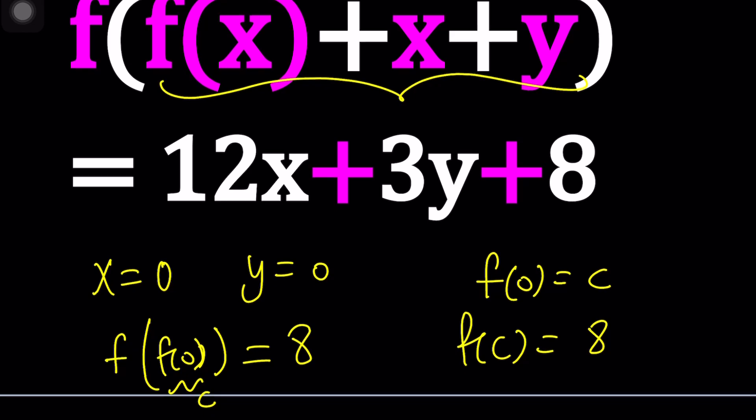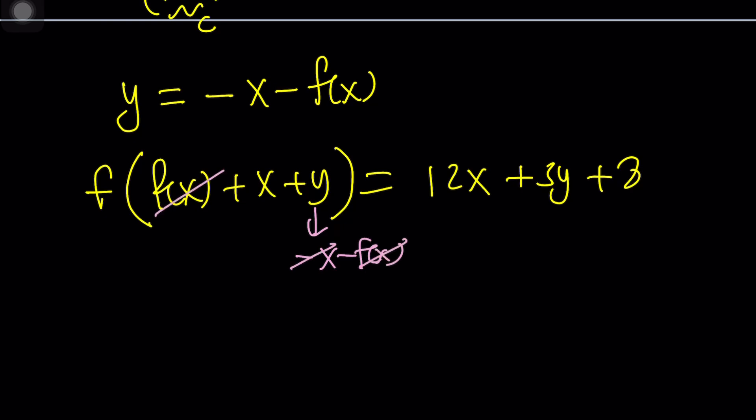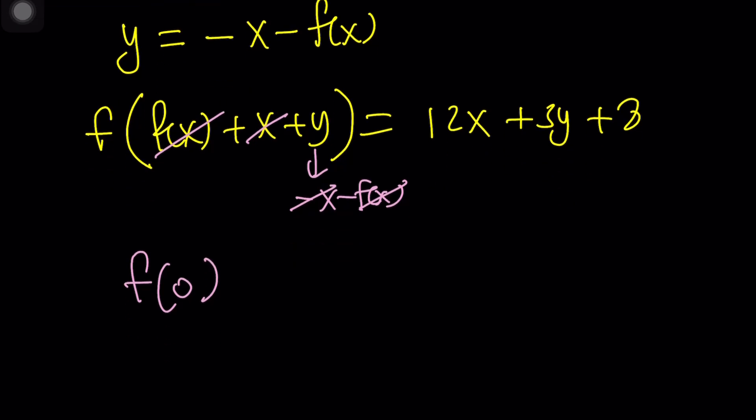Make sense? Now when you replace, let me write the function equation one more time. f of f of x plus x plus y equals 12x plus 3y plus 8. So when you replace y with negative x minus f of x, everything inside the parentheses will cancel out. You're going to end up with f of 0. Right?